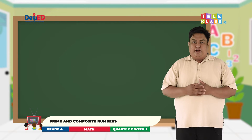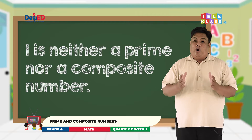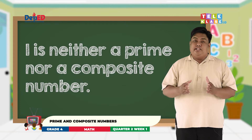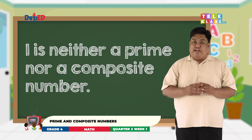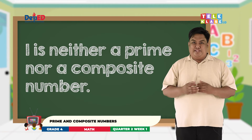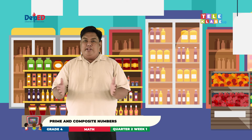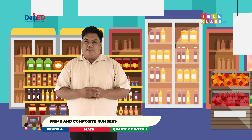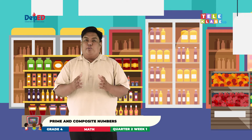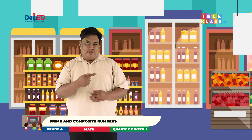How about 1? 1 is neither a prime nor a composite number. 1 is not prime since it only has one divisor, nor composite since it only has one factor. Did you understand, my dear Mat Gagaling viewers? Great! To deepen our understanding about prime and composite numbers, we will have a short trip to the mall. Are you excited? Let's go!